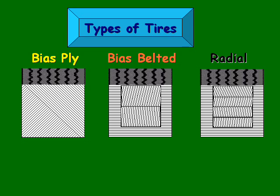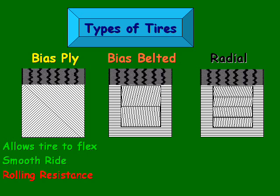Now let's take a look at the advantages and disadvantages of each design, starting with the bias ply. One of the advantages is that it allows the tire to flex more, and that typically will translate into a smoother ride on rough surfaces. However, some of the disadvantages are there's increased rolling resistance and there's less control or less traction the faster you go. So the faster you go on a bias ply, the less control you have.